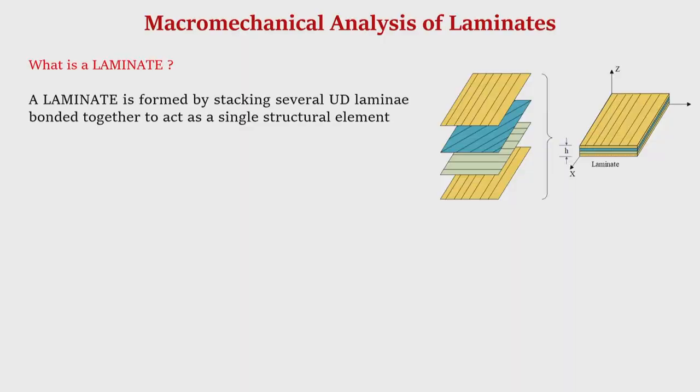Let us first understand what a laminate is. In our earlier discussions on fiber reinforced polymer matrix composites, we defined important terminologies like lamina and laminate. A laminate is formed by stacking several unidirectional lamina bonded together to act as a structural element. As seen in this figure, there are four lamina stacked together — lamina 1, 2, 3, and 4 — perfectly bonded so they act as one unit.